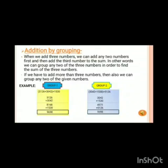Now let's learn addition by grouping. When we add three numbers, we can add any two numbers first and then add the third number to the sum. In other words, we can group any two of the three numbers in order to find the sum of the three numbers. Let's look at the example. If we have to add three addends, first we add any two and then we add the third number to find the sum. Now students, if we have to add more than three numbers then also we can group any two of the given numbers. Or we can say if we have four numbers to be added, we can group them in any order but the sum remains the same.